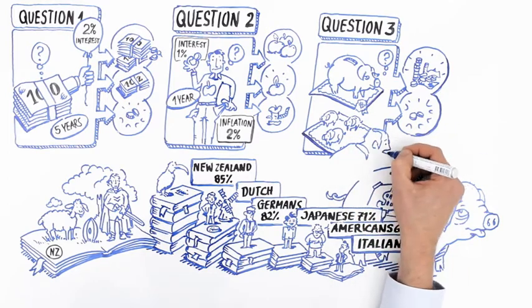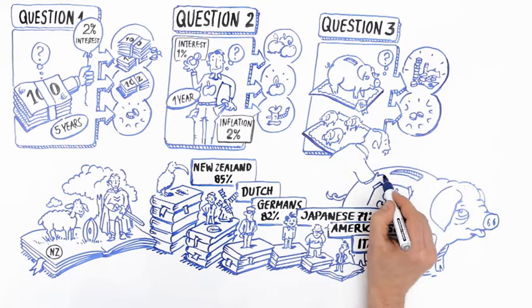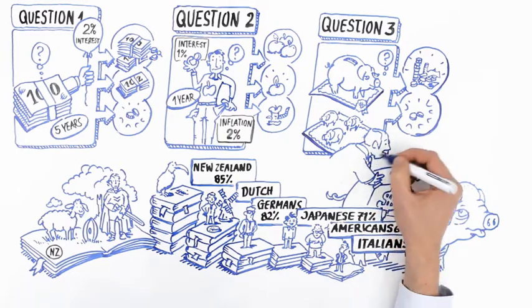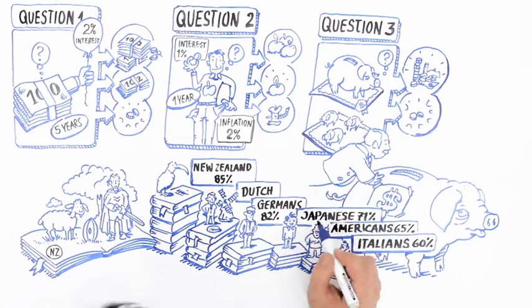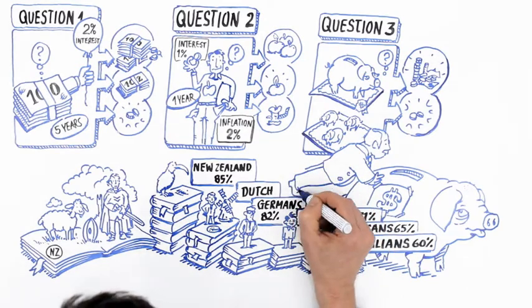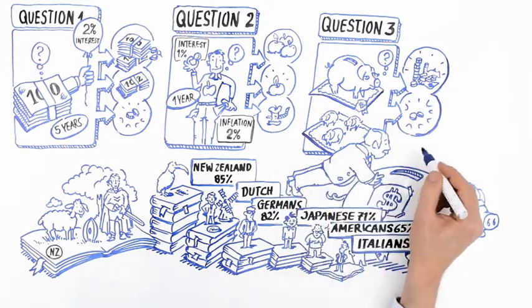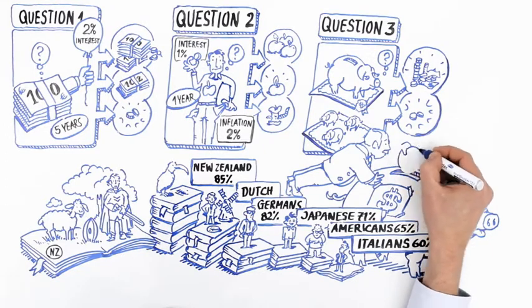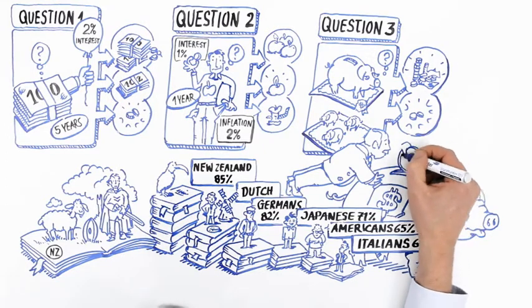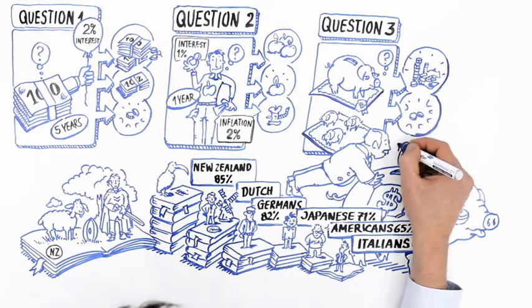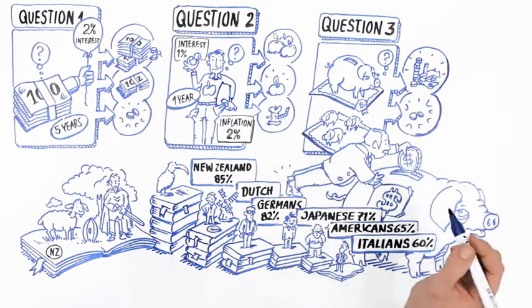Today's landscape is one of constantly shifting risk. People are increasingly on their own in terms of retirement planning. Yet many remain financially illiterate, even at basic levels, and so they are ill-equipped to deal with this new reality.